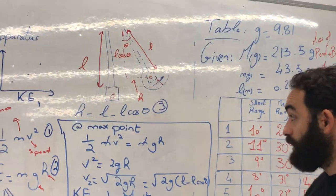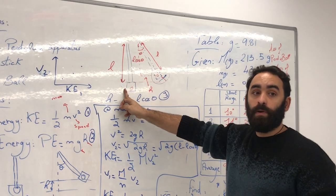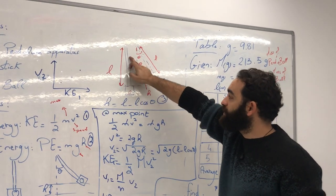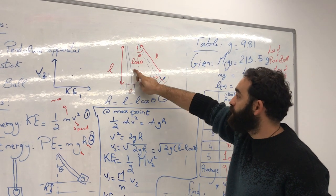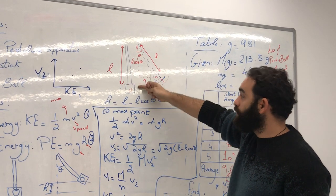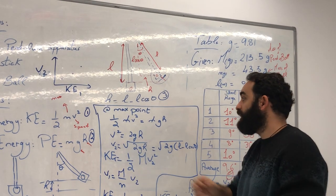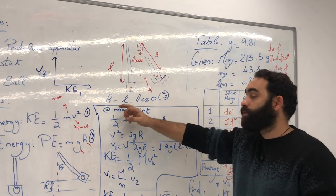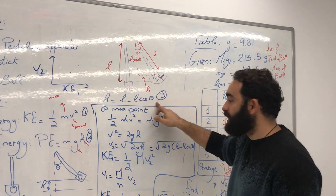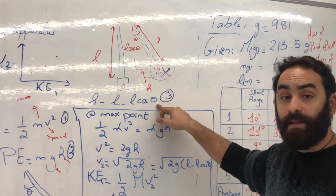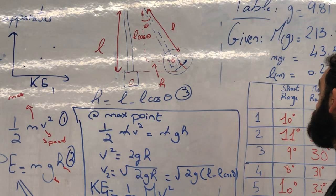To calculate the height: we have the length of the pendulum L, and after the angle theta is reached, the height is L cosine theta. So to get the height h, we do L minus L cosine theta — the length minus the length at maximum height. This is exactly what we will study.